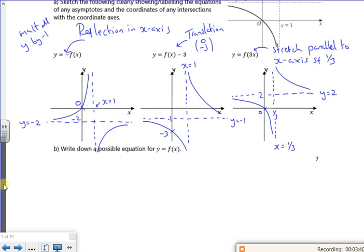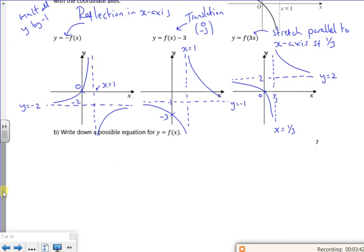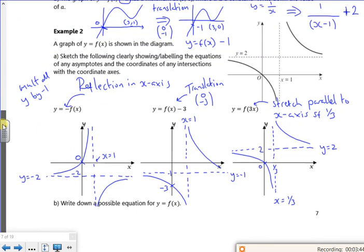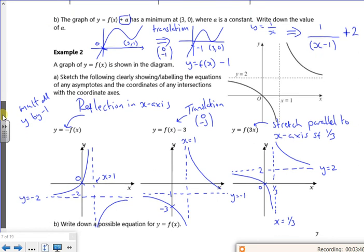So it's write down a possible equation for y equals f of x. I've done that already up there, let's see. So it was 1 over x minus 1 plus 2. It's got to be some consolidation now, hasn't it? In class, I do like a big bubble thing in the middle with a picture. And we do all of them all around it, so it's just a recap.